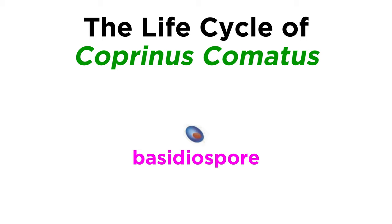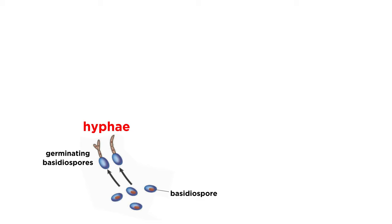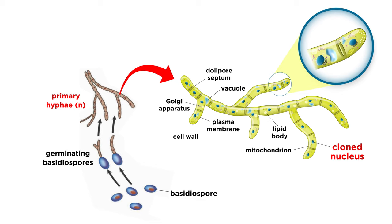Let's begin with a single spore from this fungus. We call any spore from a basidiomycete a basidiospore. This basidiospore has a single nucleus, and if it inhabits the correct environmental conditions, it will germinate and begin to produce filamentous structures, which we know are called hyphae. As more and more hyphae are formed, the single nucleus from the basidiospore replicates, and a separating wall between the two cloned nuclei forms.